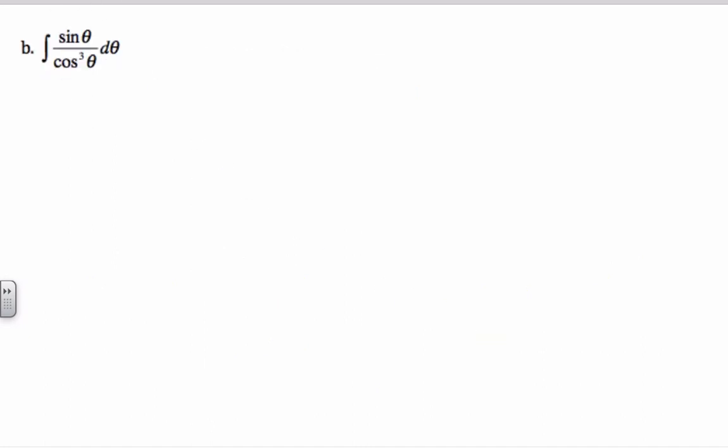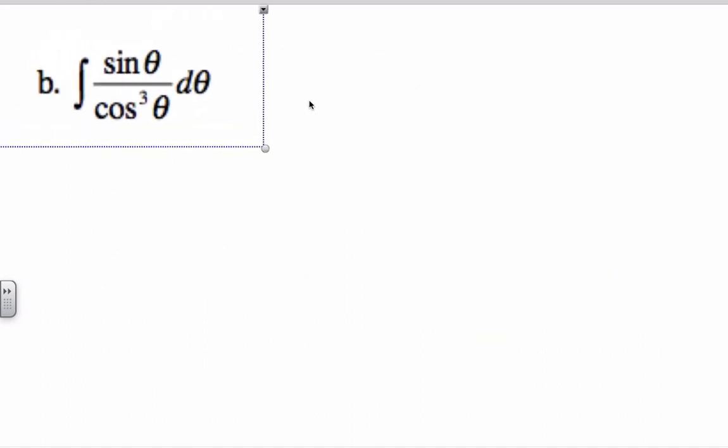We'll try another one here. Let's make it a little bit bigger. All right, so now I have to find my inside function. And what I can recognize, well, the derivative of a cosine is sine. So I have to recognize that this is the same thing as saying sine theta times cosine theta to the minus 3.